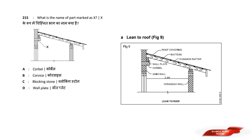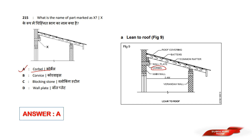What is the name of the part marked as X? Options are: A) Corbel, B) Cornice, C) Blocking, D) Wall Plate. Answer option A is Corbel. The answer is Corbel.